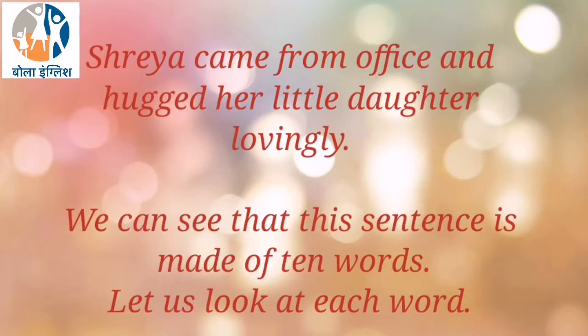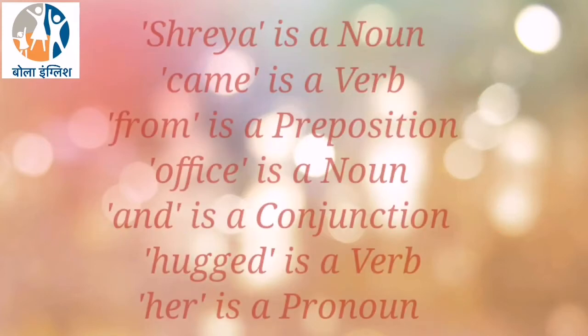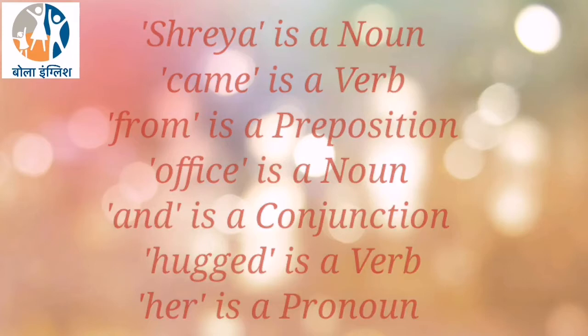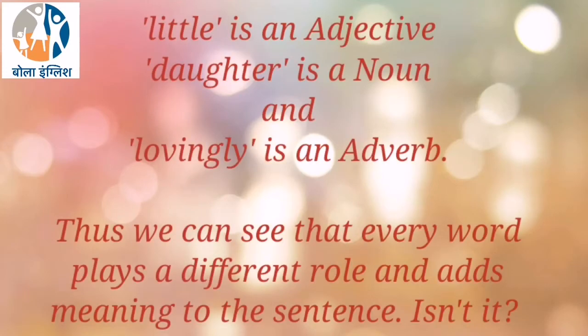Let us look at each word. Shreya is a noun. Came is a verb. From is a preposition. Office is a noun. And is a conjunction. Hugged is a verb. Her is a pronoun. Little is an adjective. Daughter is a noun. And lovingly is an adverb.